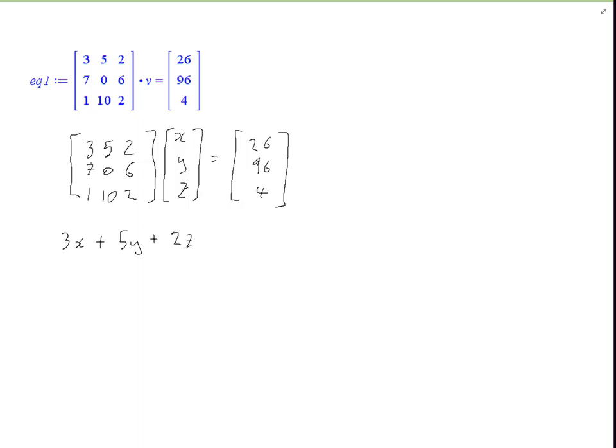Top row, next row will be 7x plus 0y plus 6z. And the bottom row will be x plus 10y plus 2z.